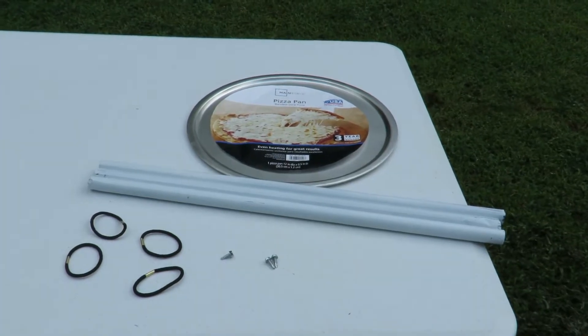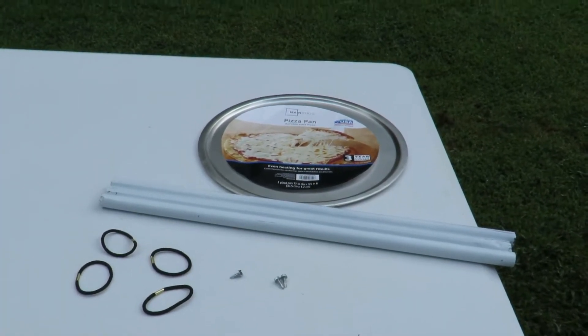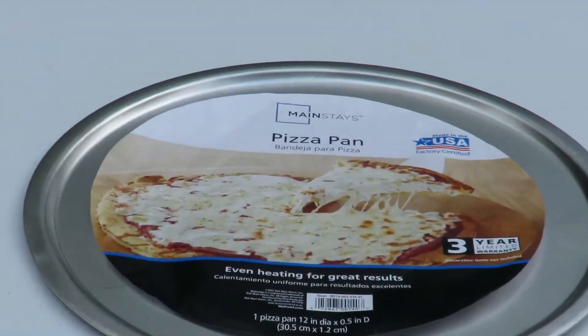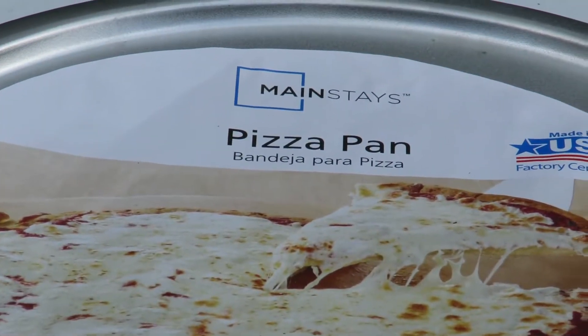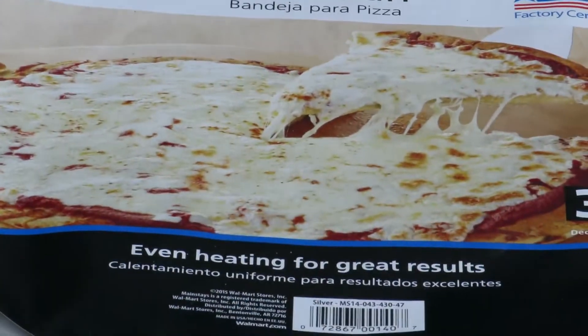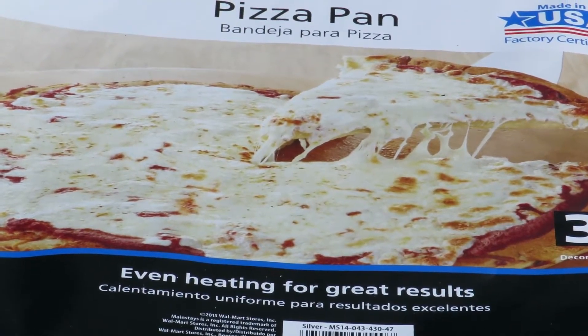For this project you're going to need a 12 inch pizza pan, you can buy that at Walmart or Dollar Store. You'll also need four elastic hairbands, they're 15 for a buck at the Dollar Store. Six self-tapping screws, get those at any hardware store.